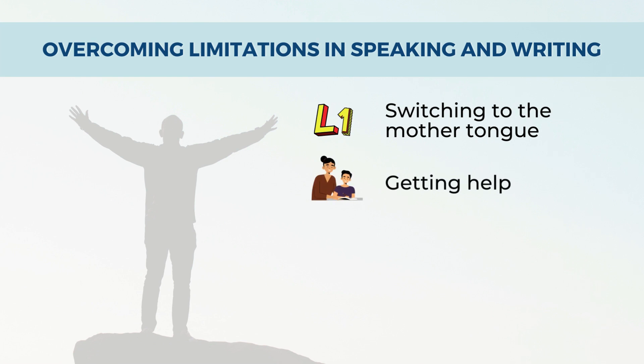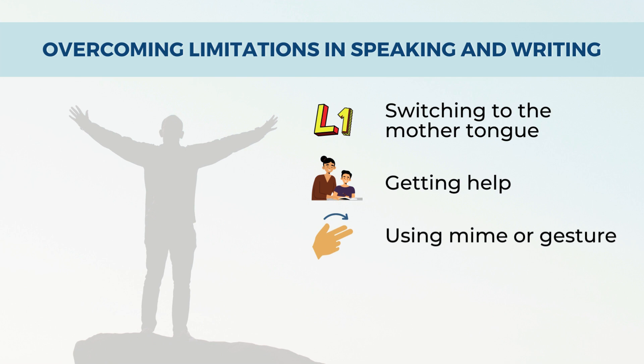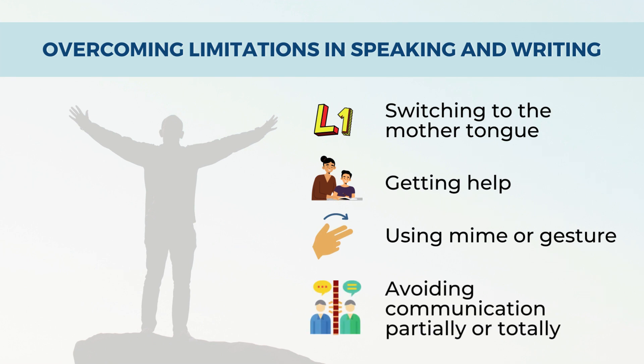Next is getting help — asking someone for help or explicitly asking for the person to provide the missing expression in the target language. Using mime or gesture: using physical motions, such as mime or gesture, in place of an expression to indicate the meaning. Avoiding communication partially or totally: partially or totally avoiding communication when difficulties are anticipated. This strategy may involve avoiding communication in general, avoiding certain topics, avoiding specific expressions, or abandoning communication in mid-utterance.